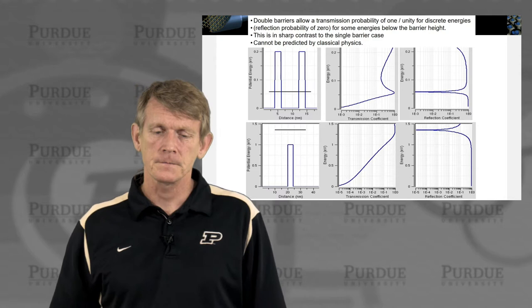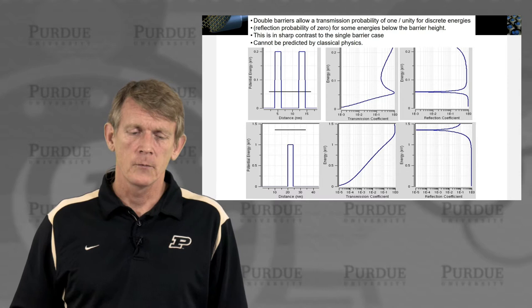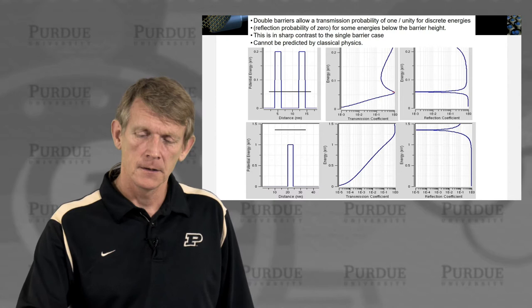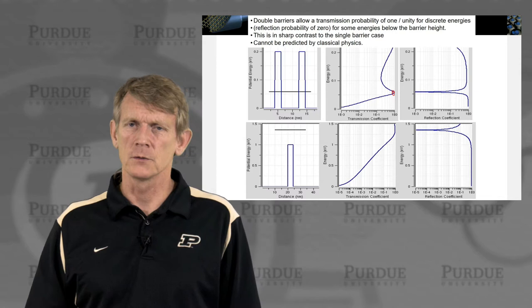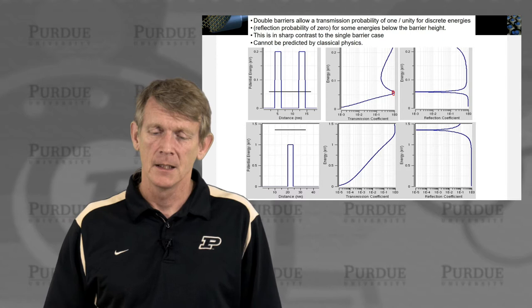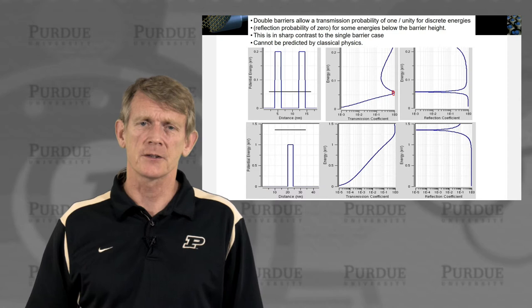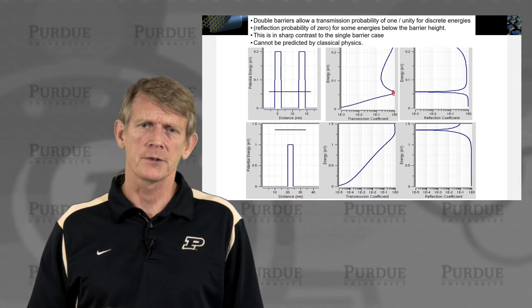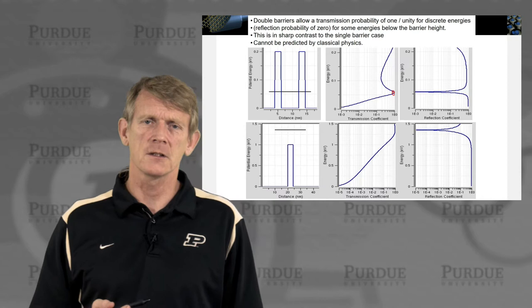In a double-barrier structure, as sketched on the top left, we can actually get a transmission that is perfectly one at a specific energy. The reflection coefficient goes to zero, as shown on the log scale as a deep dip. That means you can get perfect transmission through a structure that you could never achieve with a classical approach — this electron wave function can tunnel through a double-barrier structure and achieve perfect transmission.